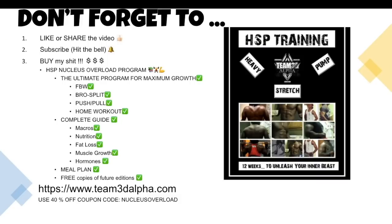Alright guys. Don't forget to like or share the video. Subscribe and hit the bell. And buy my HSP Nucleus Overload Training Program. It's the ultimate program for maximum muscle growth. It includes full body workouts, splits, bro splits, push-pull, home workouts, you name it. It also comes with a complete guide for macros, nutrition, fat loss, muscle growth, hormones, including a meal plan. It's pretty much all my 16 years of experience condensed into one fucking book. You're also going to get free copies of any future editions. So visit team3dalpha.com and you can use the 40% off coupon code Nucleus Overload. Or you could just buy the shirt at full price. Alright guys, I'm out of here.